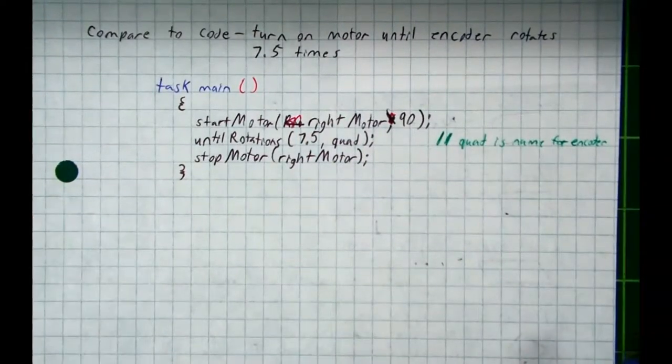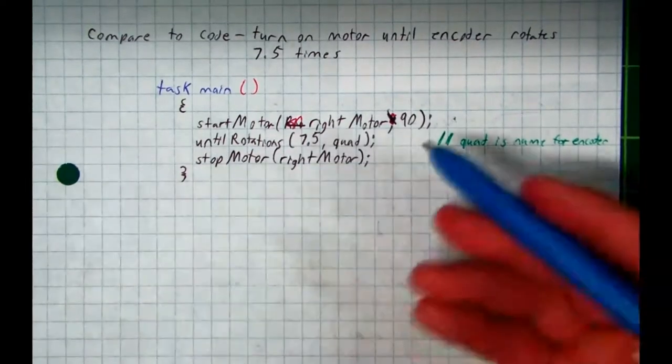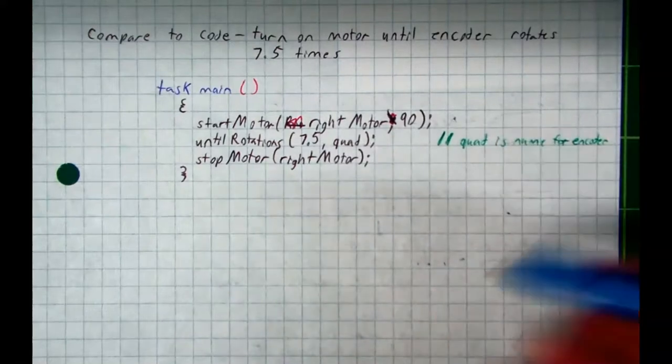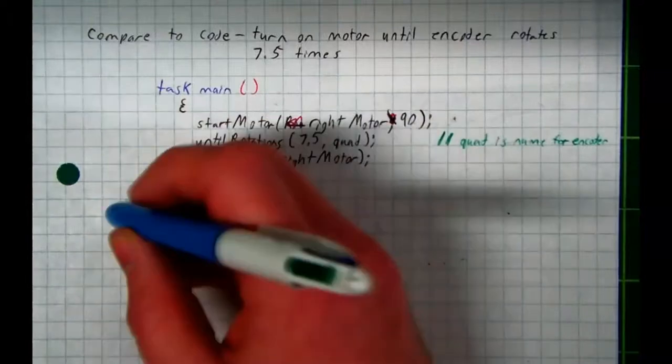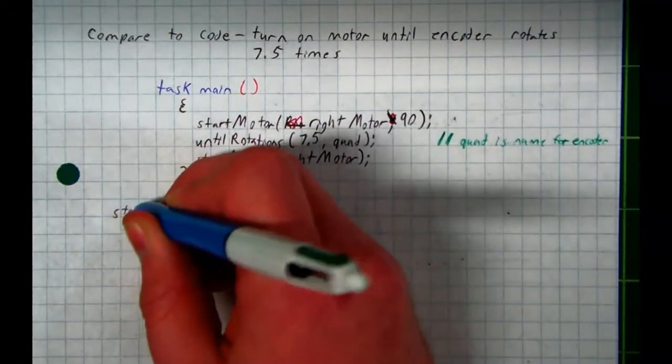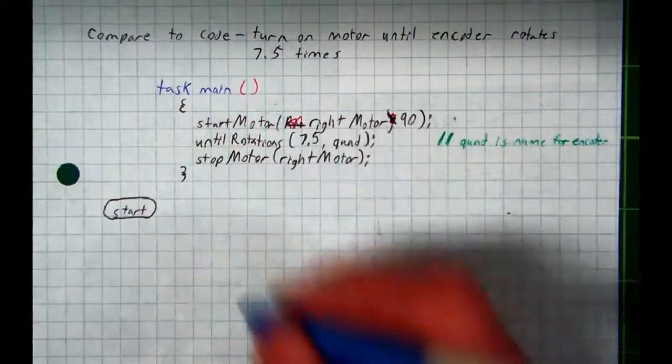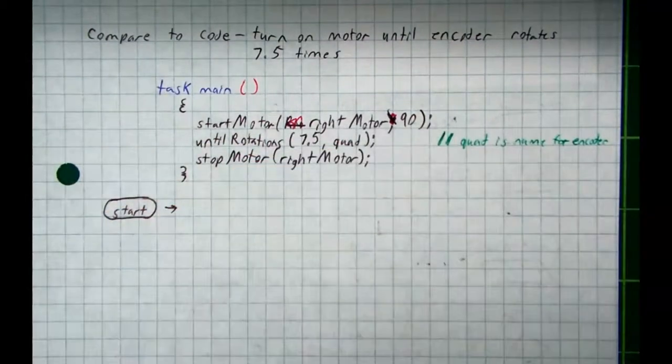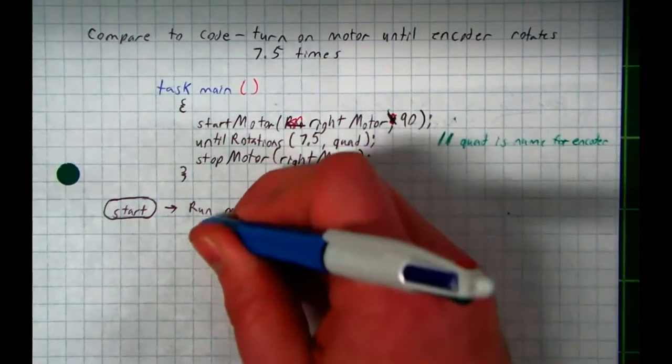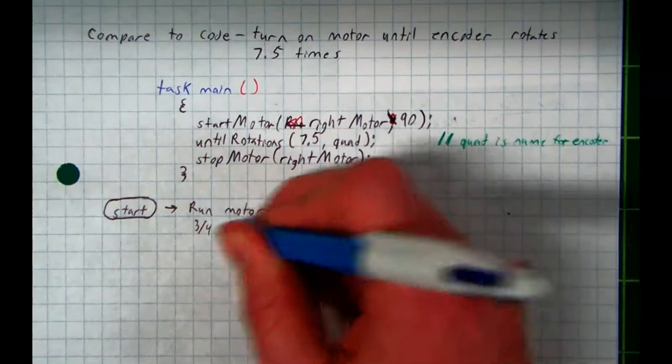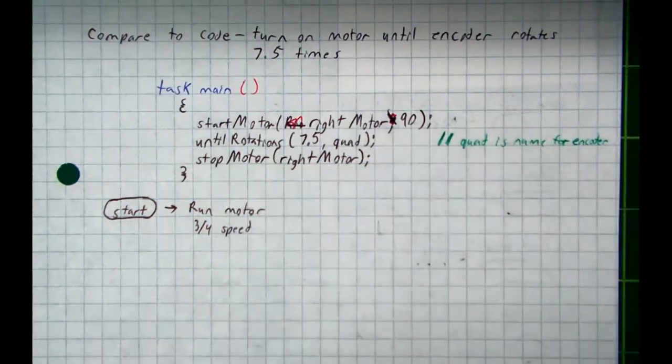Let's write out what the flowchart will look like in comparison. So what do we always start with? Start in a little circular rectangle or rounded off rectangle or a slot, I guess is an easy way to put it. Start. What's the first thing we do? The motor's running. Run motor at three-quarter speed. It's not exactly three-quarter, but close enough. This would be a process.